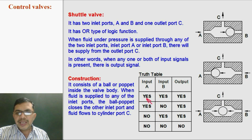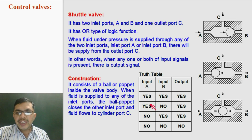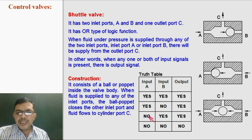If input A is present and input B is present — if both inputs are present — then there will be output at C. If any one input is present, that is, if input A is present and B is not there, then also there will be output. If input B is present and A is absent, then also there will be output. If there is no input A and no input B, then there won't be output at C.